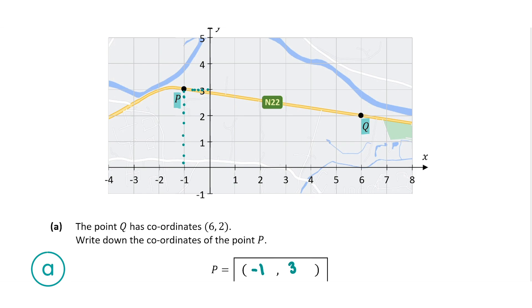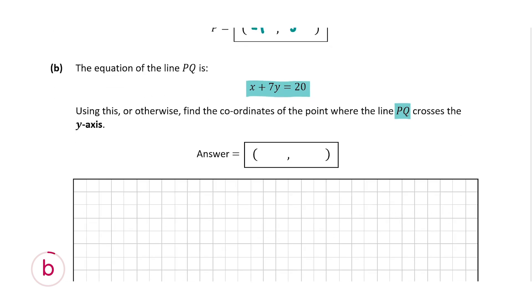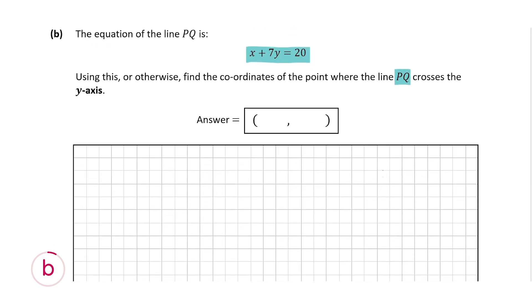So let's move on to the next question. We're told that the equation of PQ is x + 7y = 20. We're told using this or otherwise find the coordinates of the point where PQ crosses the Y-axis. So when you're given the equation of a line, which we are in this case, to find where it crosses the Y-axis, you let x = 0. And if you're asked to find where it crosses the X-axis, you'd let y = 0.